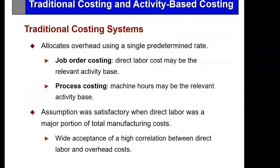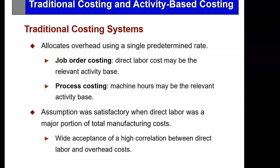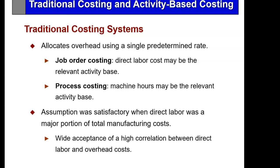In job costing, each job takes a different amount of material and labor, and we assign overhead to that job. In process costing, we follow the direct material, direct labor, and overhead — the process converting raw material into cans of Coke — and simply divide all that by the output. That was satisfactory for most companies back in the 80s, 90s, and into the 2000s.